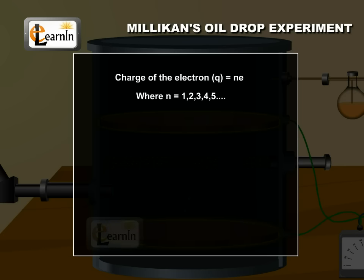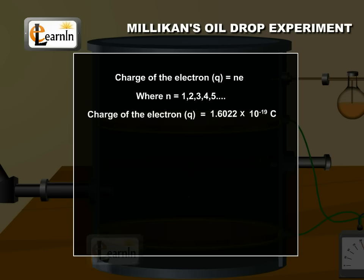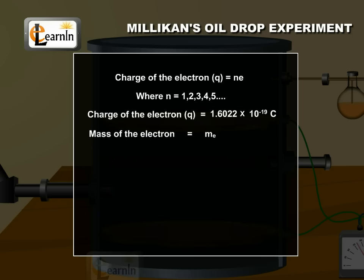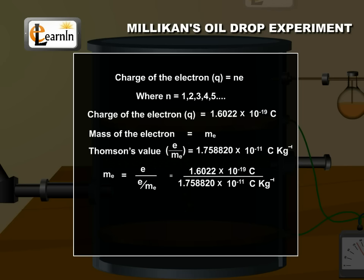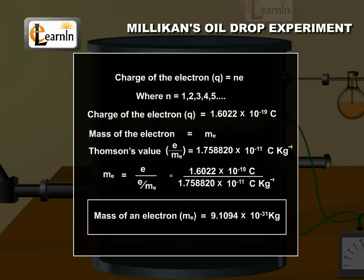Using the value of charge of the electron, the mass of the electron, ME, was then determined by combining Thomson's value of the E by ME ratio. The value shown is the value of the mass of an electron.